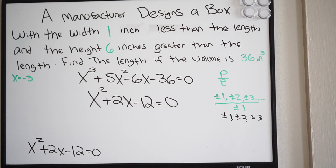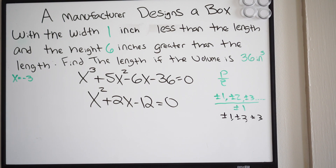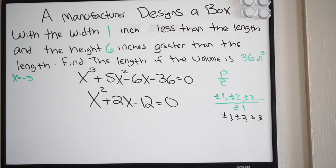We're now dealing with a quadratic, so we can try the AC method. A times C is 1 times negative 12, which is negative 12. We need two numbers that multiply to negative 12 and add to positive 2 — those numbers don't exist. So since it doesn't factor, we'll use the quadratic formula to find the remaining zeros.